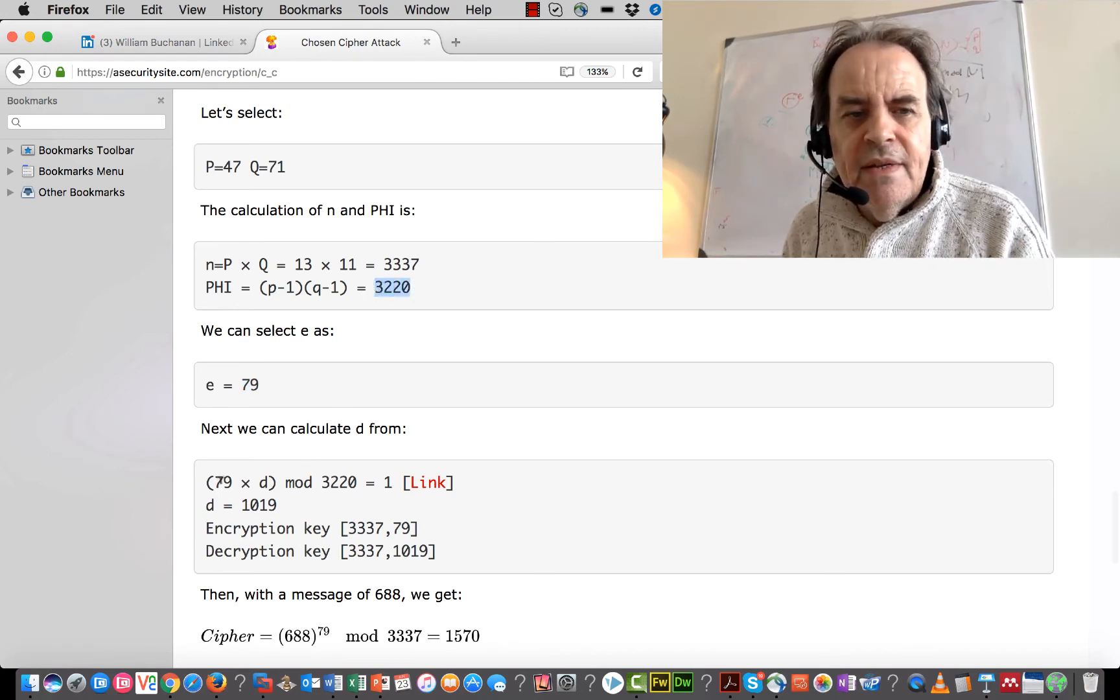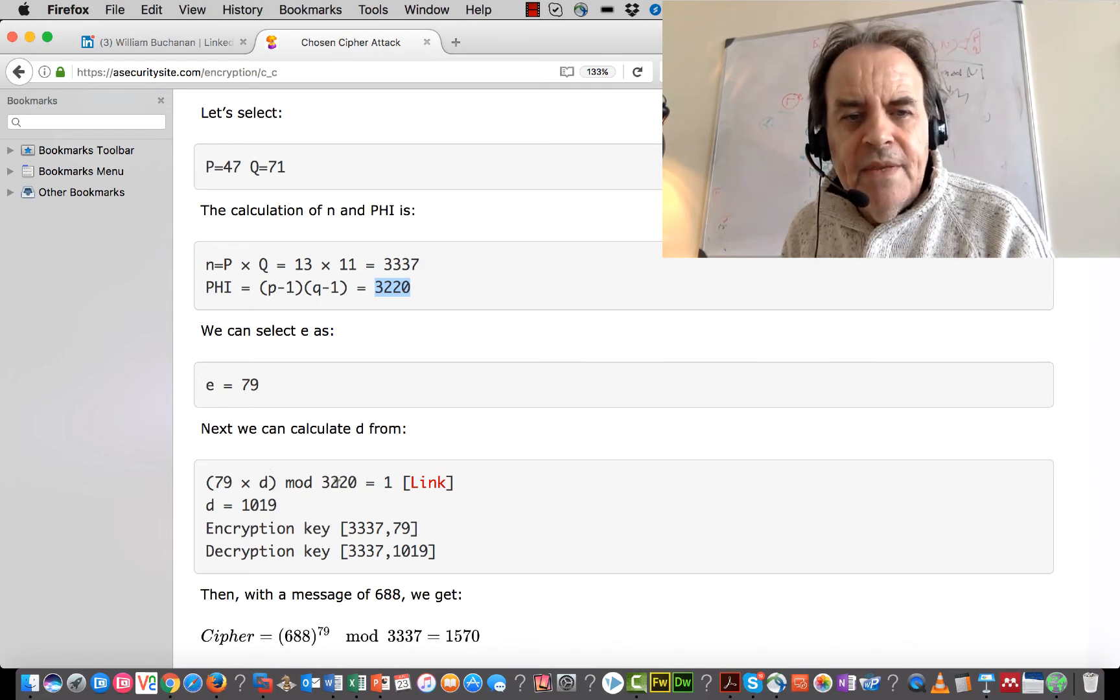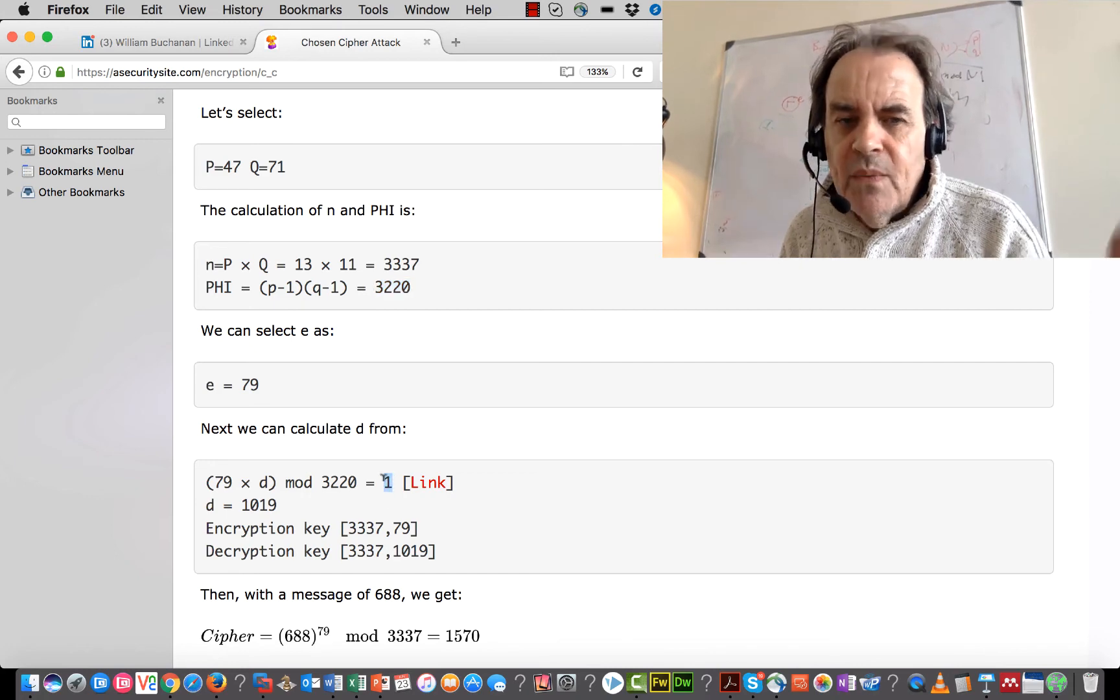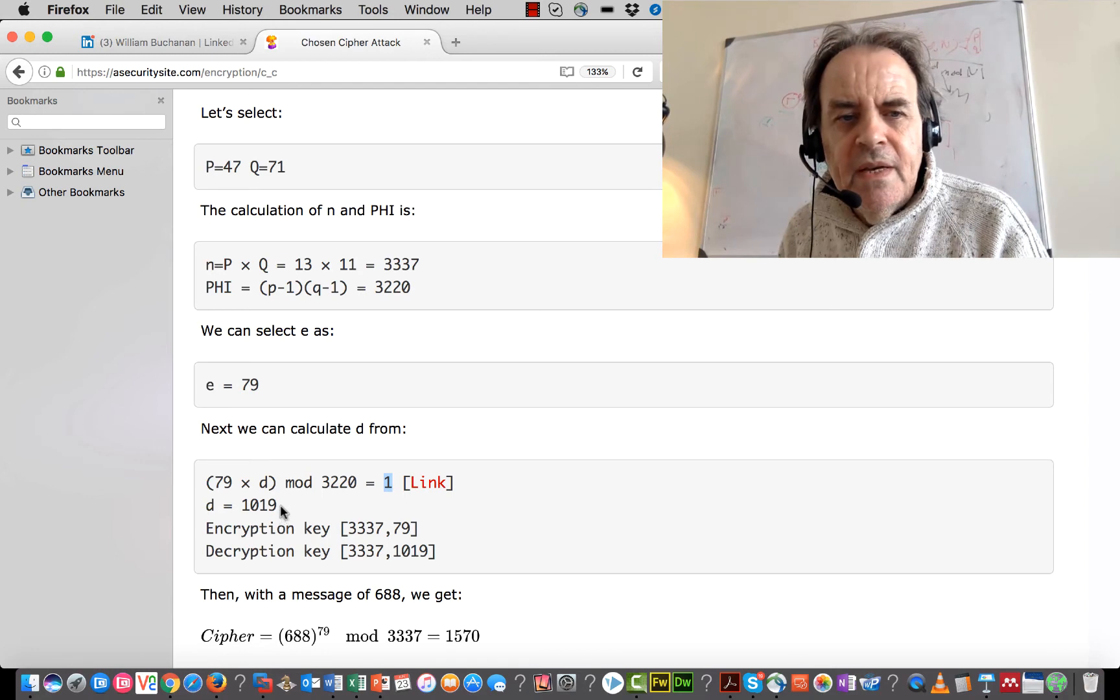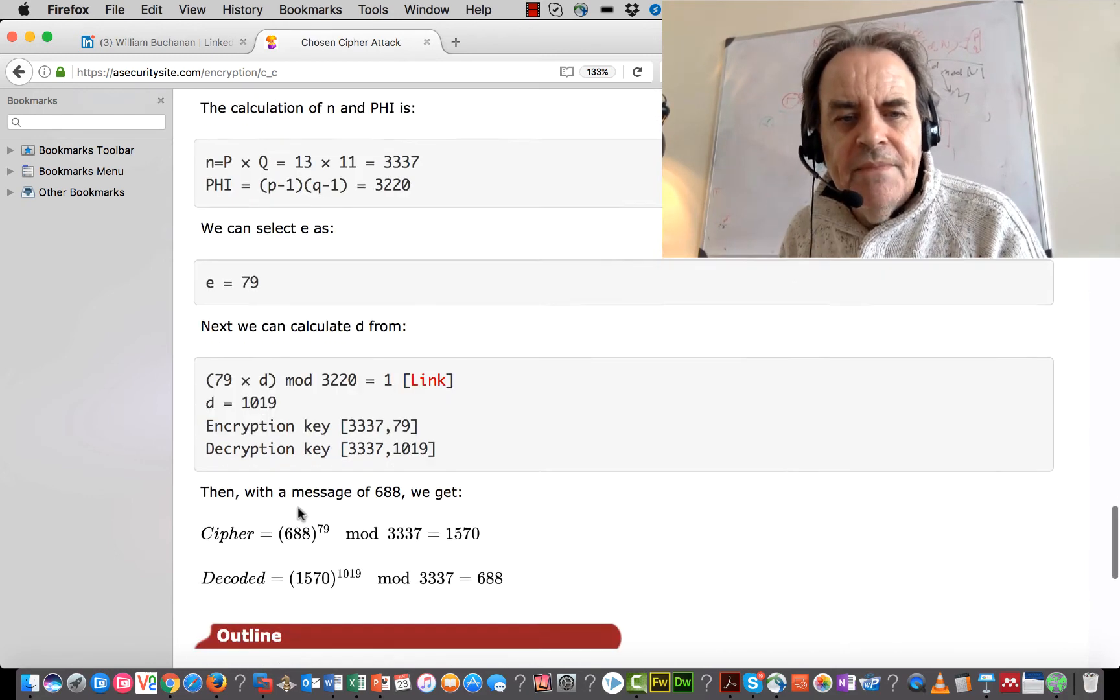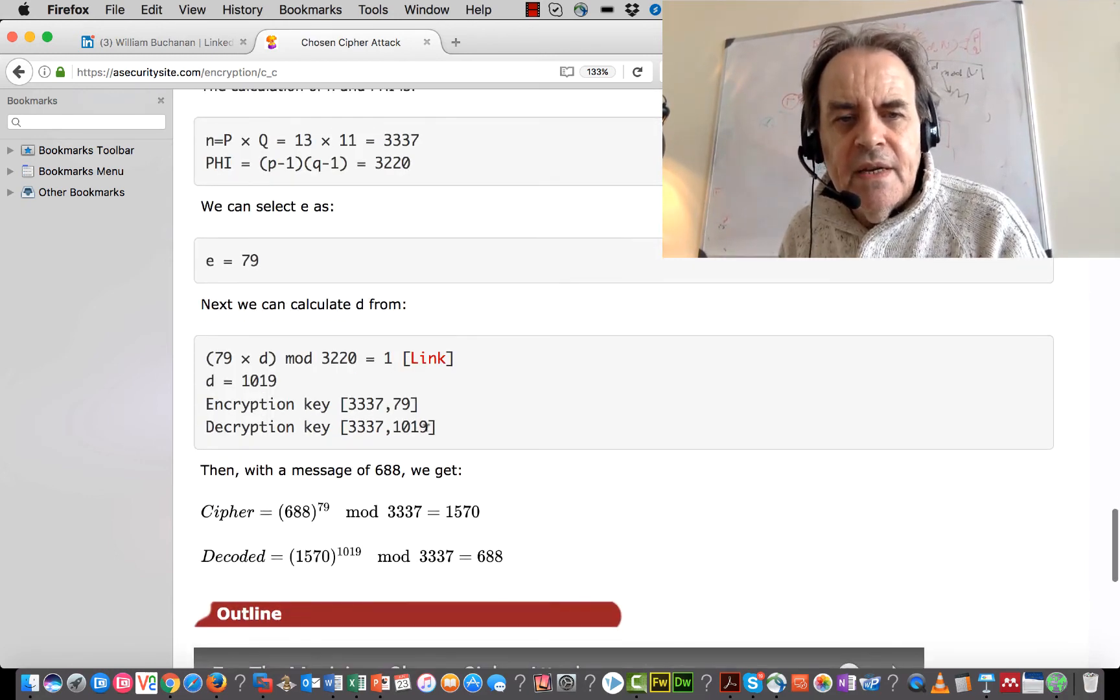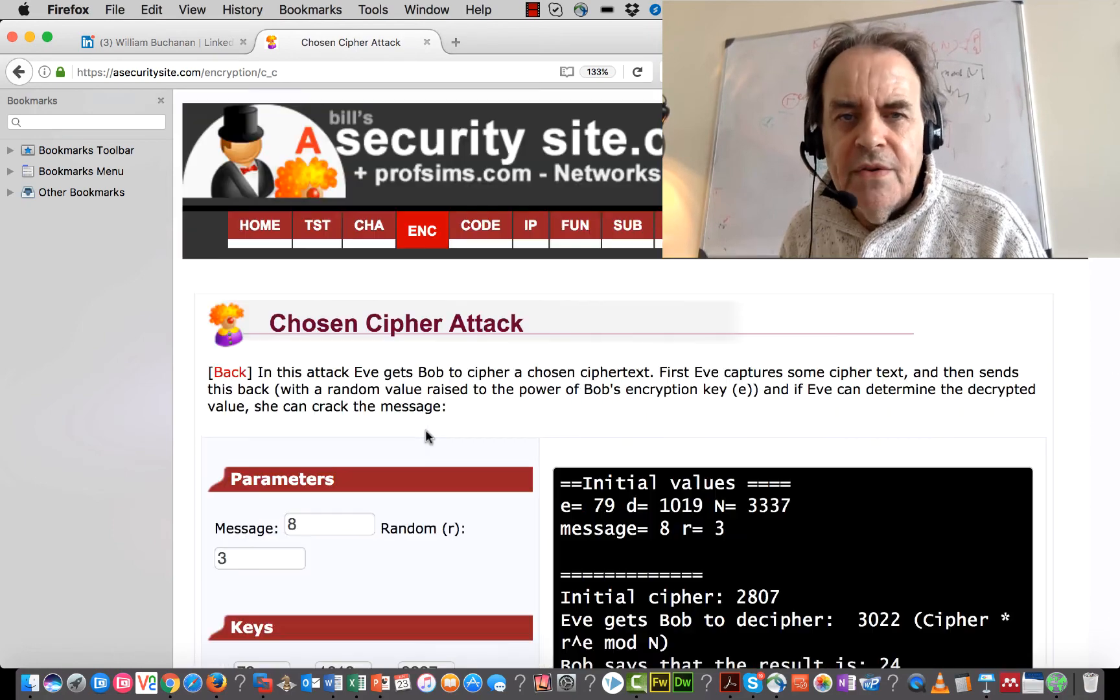And then we work out D times E. Then the mod of the Phi value is equal to 1. So 1 as we saw before, D times E is 1. And then we work out a decryption key here, and that gives us that value.